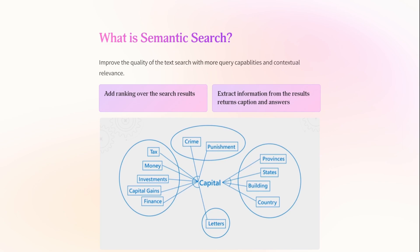What is Semantic Search? Semantic Search is an improvement or refinement to the full text search, which gives you much more query capabilities, scoring capabilities, and most importantly, contextual relevance.